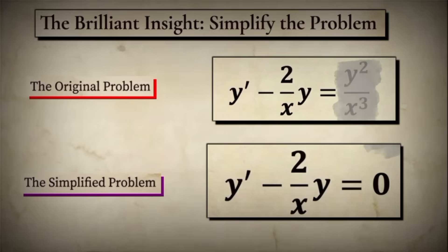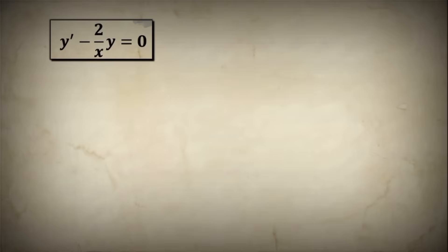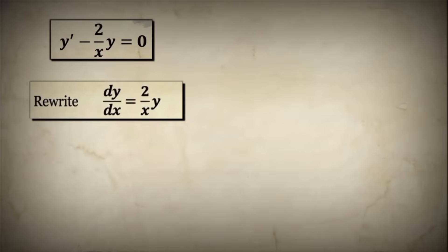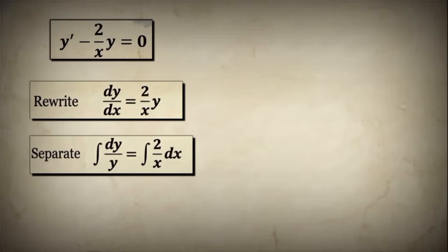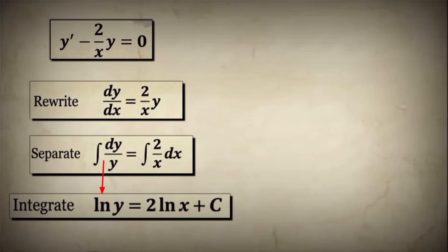This simplified equation is easily solved with separation of variables. Let me walk you through each step carefully, because this solution gives us the vital clue to the structure of the final answer. Step 1: Rewrite the equation using Leibniz notation. Starting with y' minus 2/x·y equals zero, we move the second term to the right side: dy/dx equals 2/x·y. Step 2: Separate the variables — isolate all y terms on the left and all x terms on the right: ∫dy/y equals ∫2/x dx. Step 3: Integrate both sides. On the left, the integral of 1/y is the natural logarithm: ∫dy/y equals ln y. On the right, 2 comes out as a constant and the integral of 1/x is also the natural logarithm: ∫2/x dx equals 2 ln x.